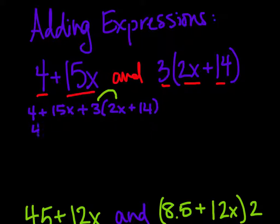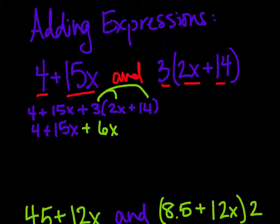We'll first write 4 + 15x. And then we have 3 times 2, which is 6x. And then 3 times 14, which is 42.